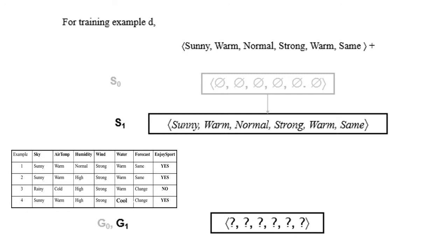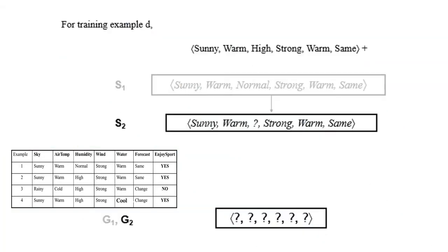For the next training sample, the target concept is yes — a positive training sample. We compare S1 with x2 to get S2. As obtained in the Find-S algorithm, the values are: sunny, warm, question mark, strong, warm, and same. Since x2 is a positive training sample, it has no effect on the general boundary, so G2 remains all question marks.